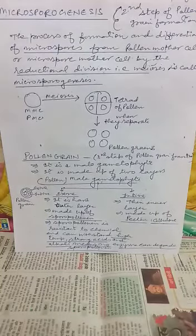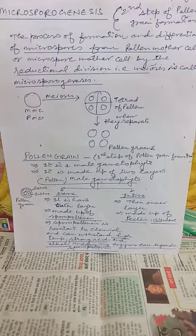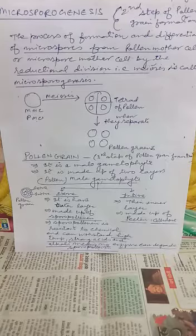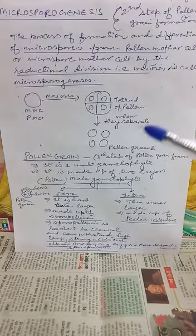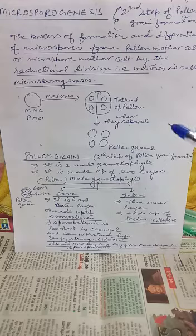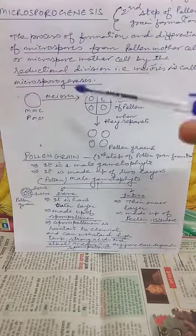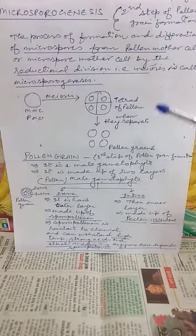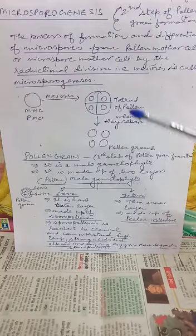Hello children. In my previous lecture you studied about the structure of anther. Here I will explain you about microsporogenesis, which is the second step of pollen grain formation. Microsporogenesis is simply the formation of microspores or pollen grains from the microspore mother cell or pollen mother cell.